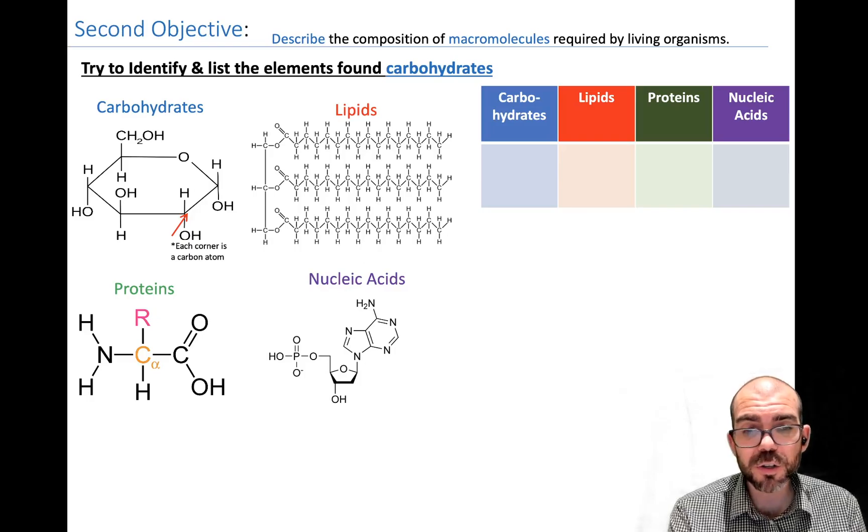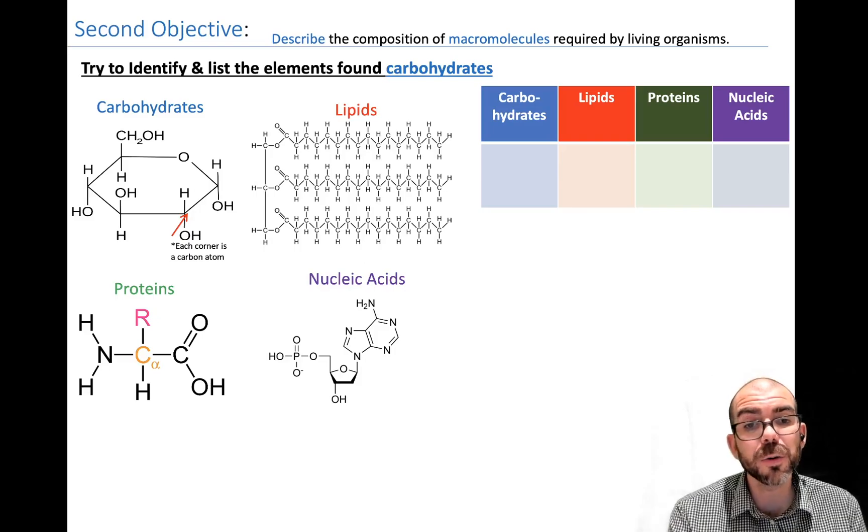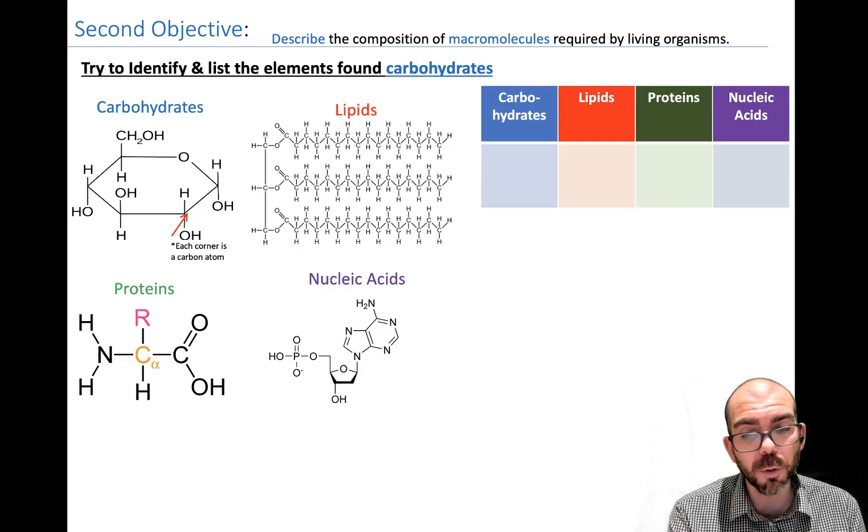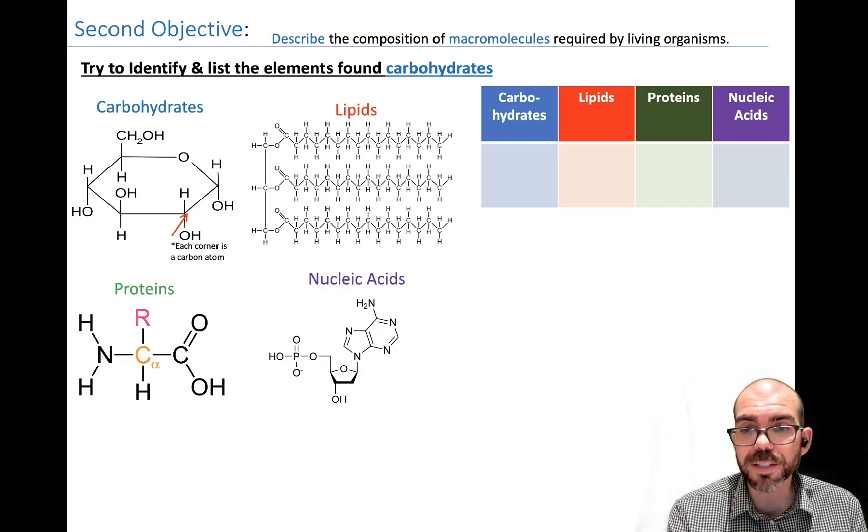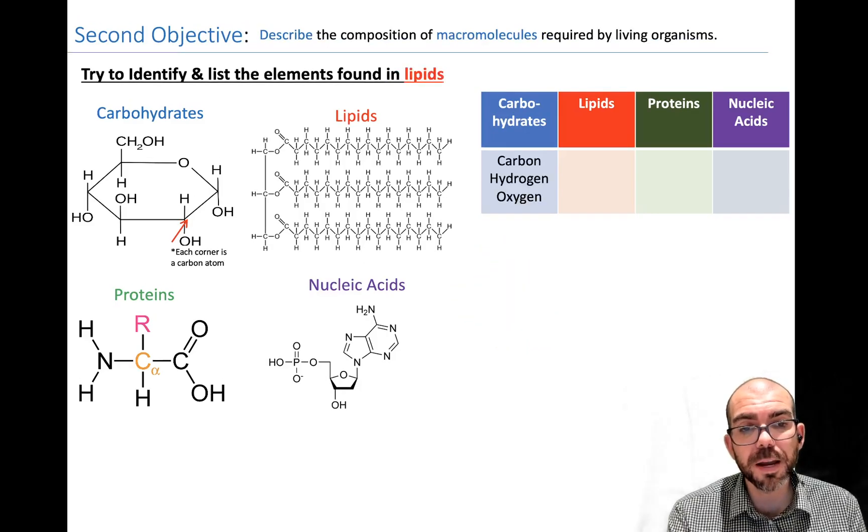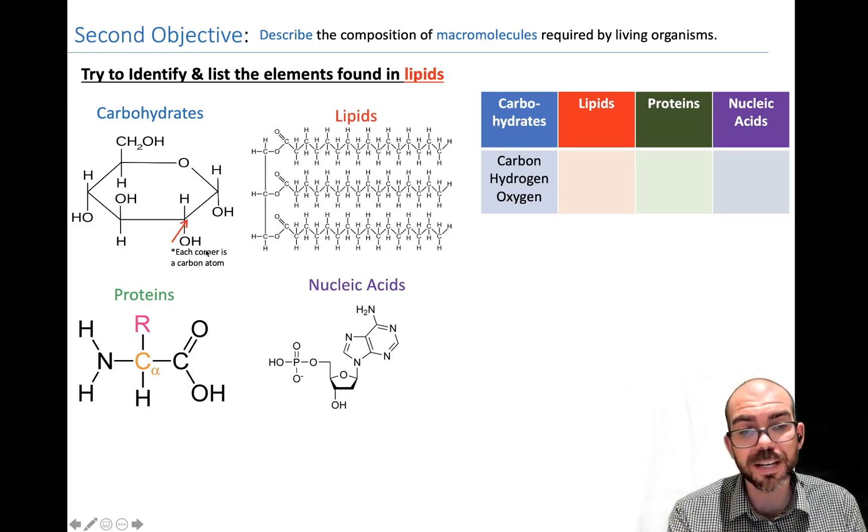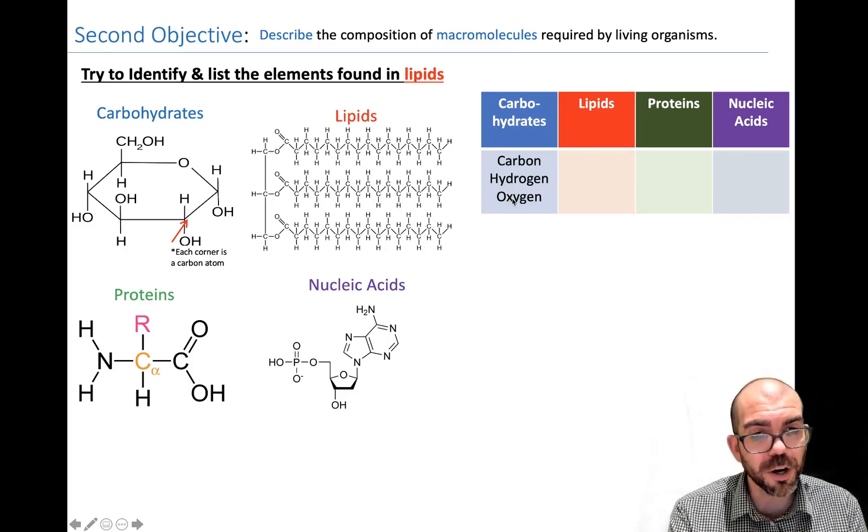I want us to identify what elements are in each because it's very helpful when you're trying to identify between the big four. Let's start with carbohydrates. Can you identify what elements are in a carbohydrate? Hopefully you noticed a carbohydrate is made up of carbon, hydrogen, and oxygen. We have plenty of carbons in this ring, hydrogens off to the side, and oxygens. Carbohydrate is called a carbohydrate because it is carbon and water, H2O.